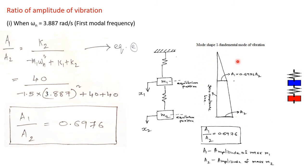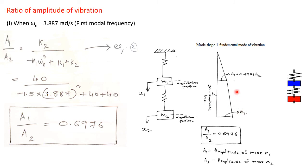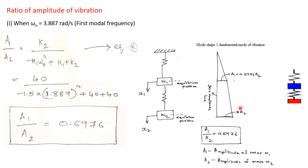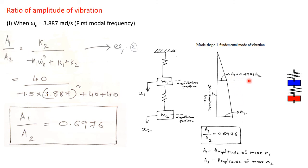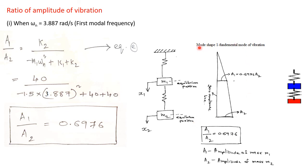If A2 is 1 unit (mm or cm), then A1 will be 0.6976 of the same unit. This gives us an understanding of how the system is displaced when vibrating at the first mode frequency of 3.887 rad/s.